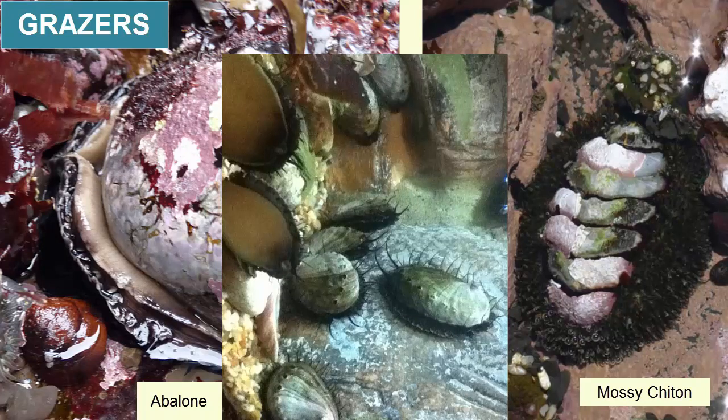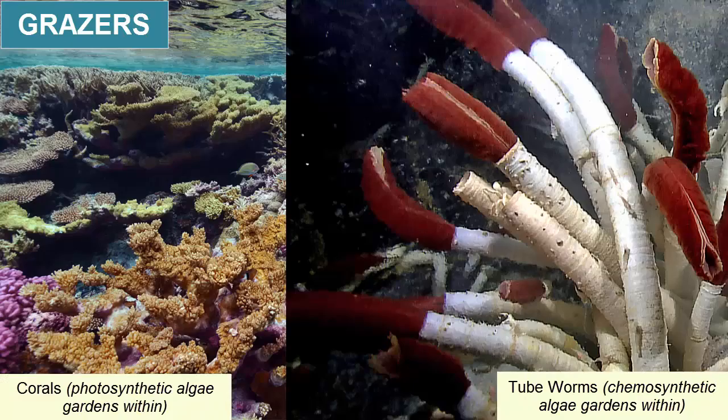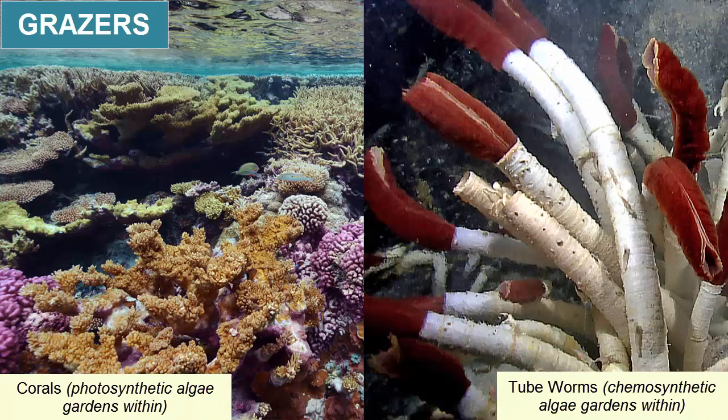Grazers also include myxotrophs, like corals and tube worms — organisms that have gardens of algae living symbiotically within their bodies.